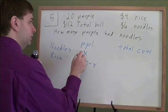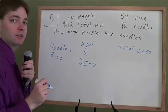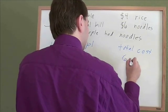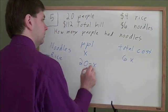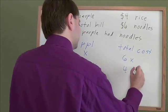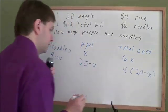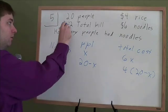If you've got x people that eat noodles and noodles cost $6 each, how much total money did you spend on noodles? Well, you spent 6 times x dollars. How much total money got spent on rice? Well, that would be the price of rice times how many times you bought rice, which is that 20 minus x.